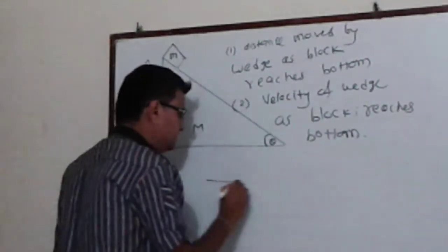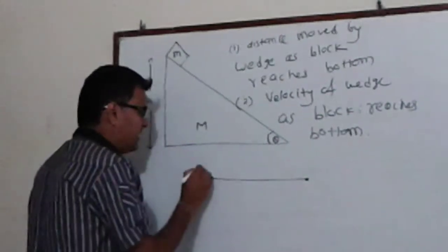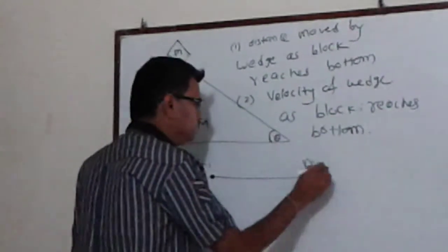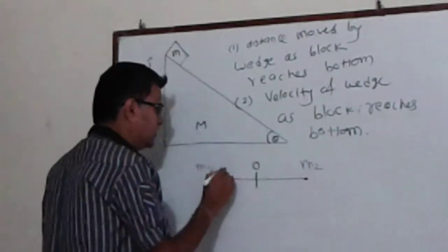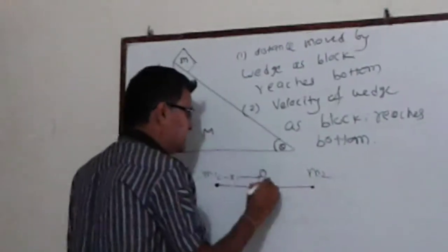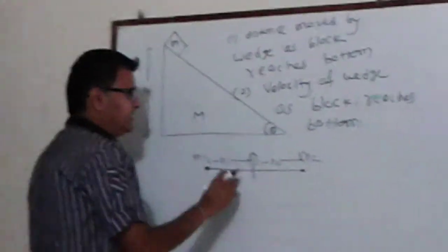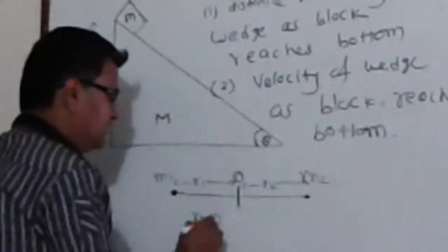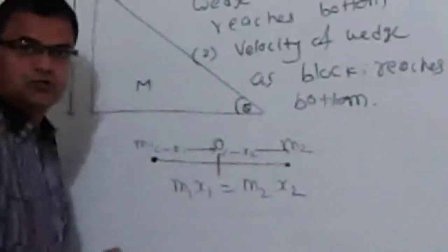Let us assume that there are two particles, M1 and M2. This is the center of mass located at O. The distance x1 is here and the distance x2 is here. Obviously, by the definition of center of mass, we have M1*x1 equal to M2*x2.